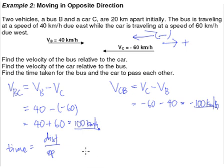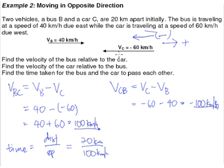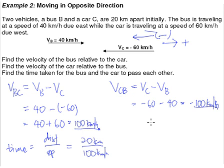When that kind of thing happens, it is the relative speed that will be more important. To find the time whereby they will meet, you simply take the distance when they are apart — 20 kilometers — divided by the relative speed of 100 kilometers per hour. The reason we use relative speed instead of the speed of the car or the bus is because the 20 kilometers is not stationary. Both the car and the bus are each moving toward that 20 kilometers distance, so the combined speed will determine when they will meet.